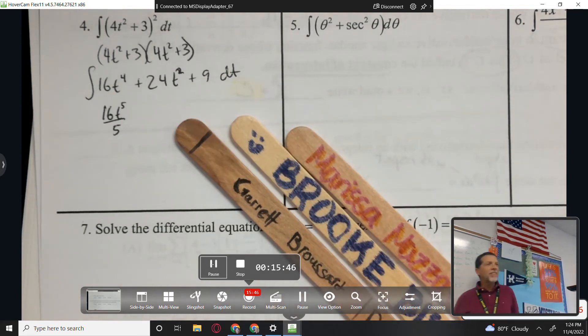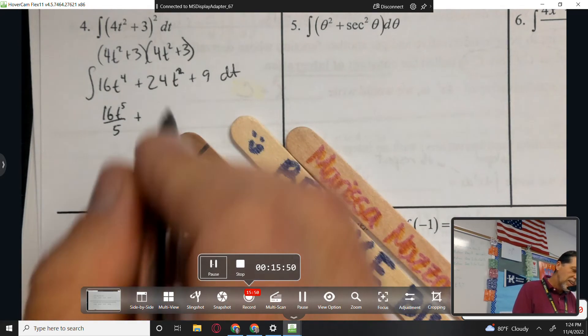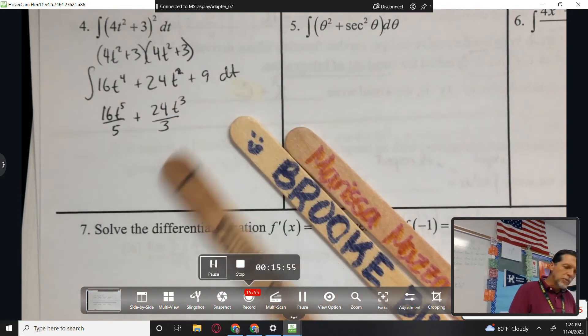Garrett, how about the antiderivative of 24T squared? It would be 24T cubed divided by 3. Good. Obviously that will reduce, but we're not worried about reducing right now.